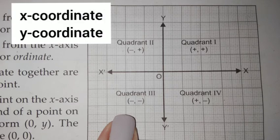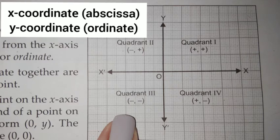We have two coordinates, which are called x-coordinate and y-coordinate. The x-coordinate is also known as abscissa, and the y-coordinate is also known as ordinate.